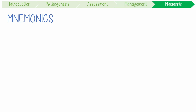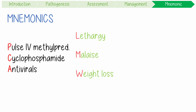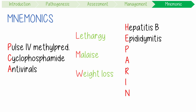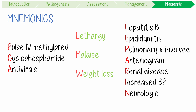To summarize with mnemonics: management is urgent and requires PCA — Pulse IV methylprednisolone, Cyclophosphamide, Antivirals. For presenting features, I remember 'low molecular weight': lethargy, malaise, and weight loss. For sequelae and investigations, I remember 'heparin': hepatitis association, epididymitis is common, it characteristically does not affect the lungs, an arteriogram can be done if biopsy is unavailable showing renal disease with increased blood pressure, and neurologic disease in the form of mononeuritis multiplex is common.